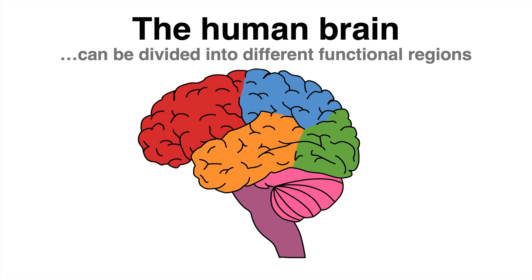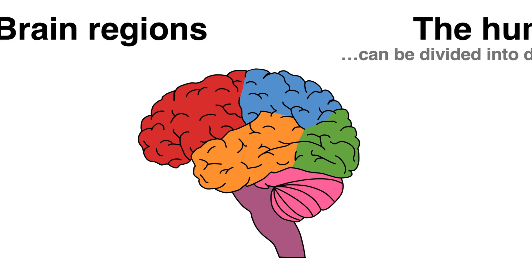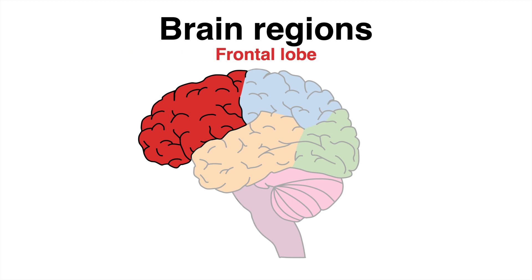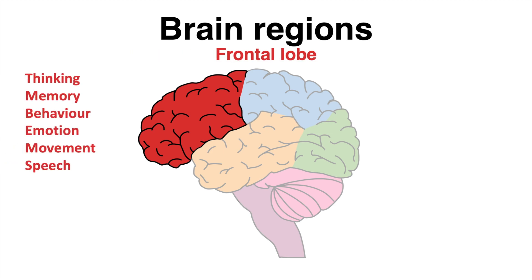Many body functions cannot be solely linked to one distinct anatomical region. However, it is known that neurons within a brain region primarily perform certain functions to a large extent. Neurons within the frontal lobe, for instance, predominantly fulfill important functions such as thinking, memory, behavior, emotion, movement and speech.